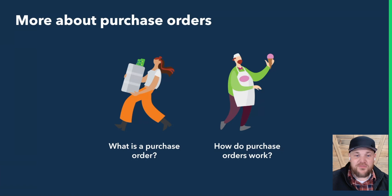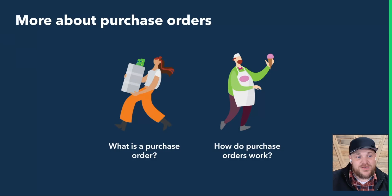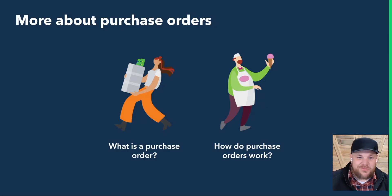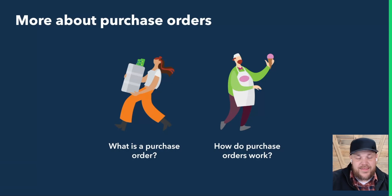If the vendor requests payment immediately, we can still use the PO function — we're just going to directly connect it to an expense versus adding it to a bill. In situations where we're going to make payments to the vendor in the future, we can post it as a bill, which will directly tie to that PO. We'll walk through some examples of that shortly.